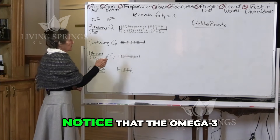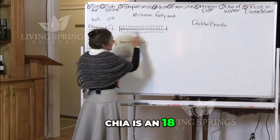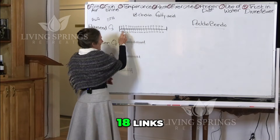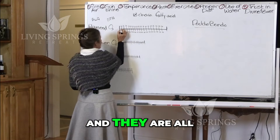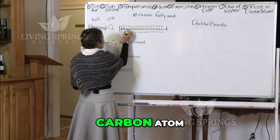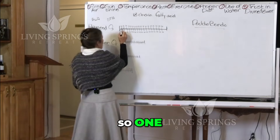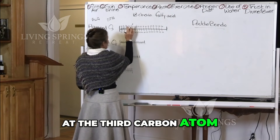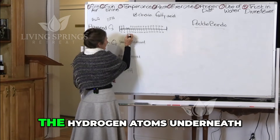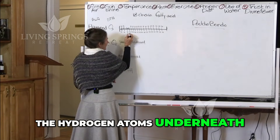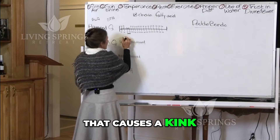Now I want to show you what that means. What does omega-3 mean? Notice that the omega-3 found in flaxseed and chia is an 18-chain fatty acid — that means there are 18 links. Either side are hydrogen atoms, all linked together with a carbon atom. The three means that at the third carbon atom — one, two, three — at the third carbon atom, there's a double bond. And whenever you get a double bond, the hydrogen atoms underneath start repelling each other, and because they're repelling each other, that causes a kink in the chain.